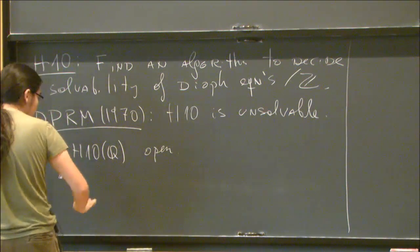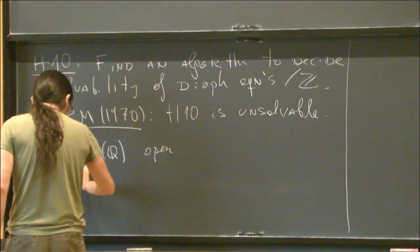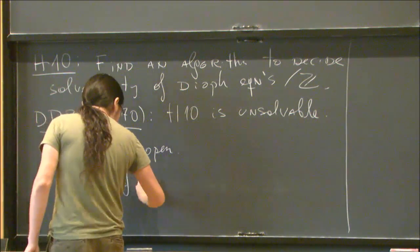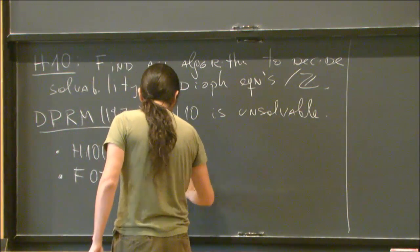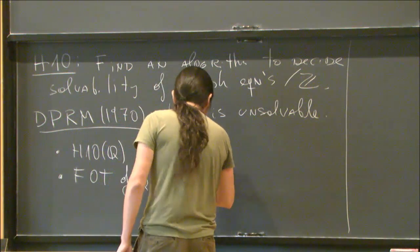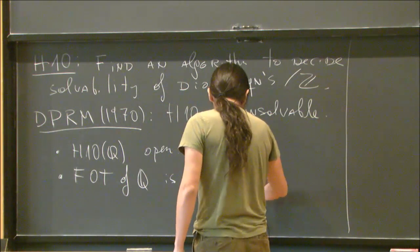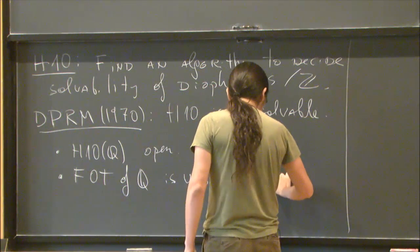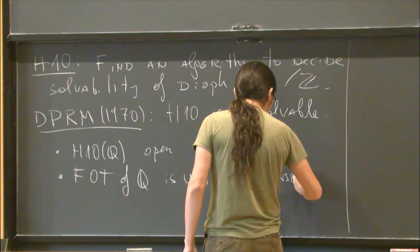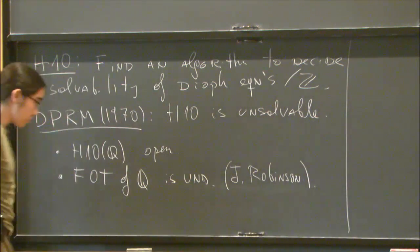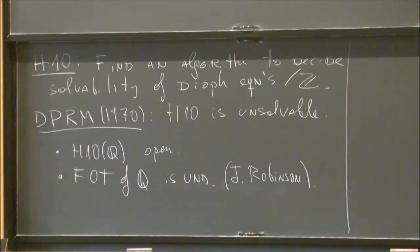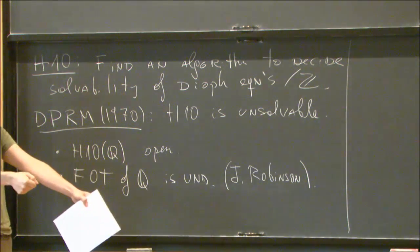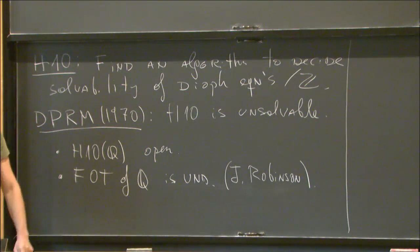However, we know something. We know that the first-order theory of Q is undecidable, and this is the theorem of the thesis of Julia Robinson using quadratic forms. So the first-order theory is the elementary sentences you can write in the language of rings for this structure, and there is no master algorithm that will tell you yes or no, this is true or false.